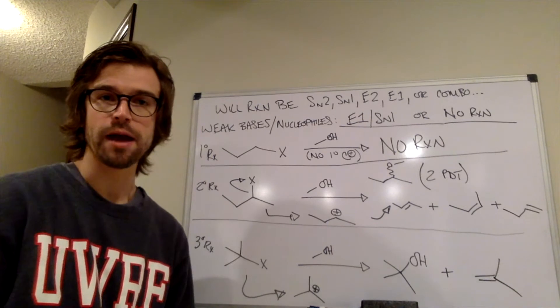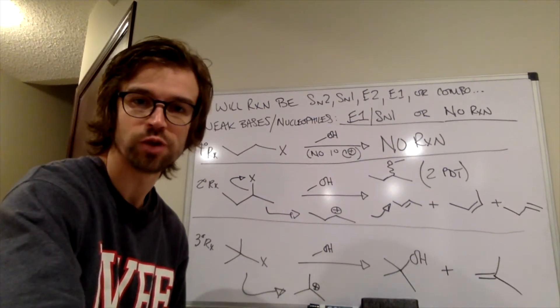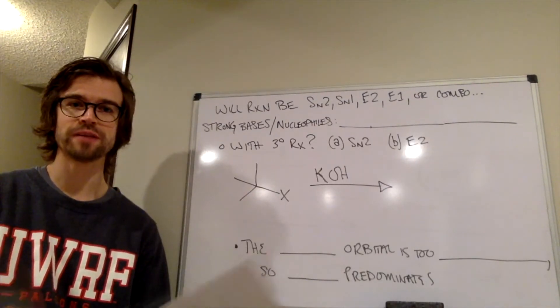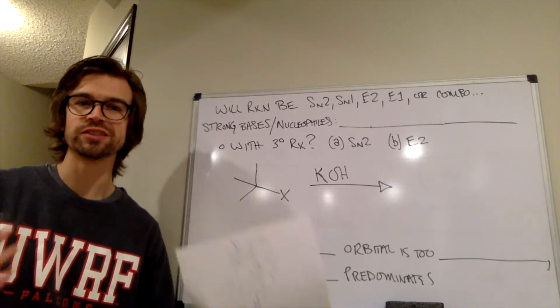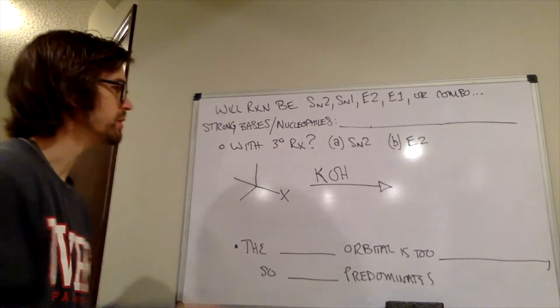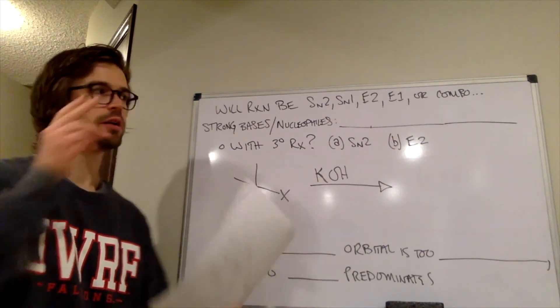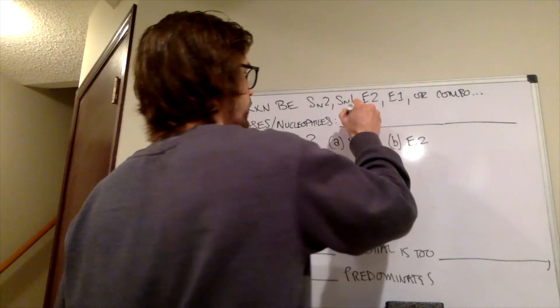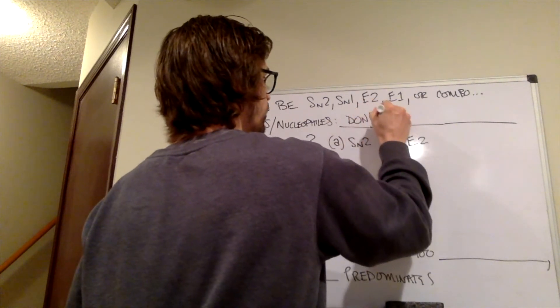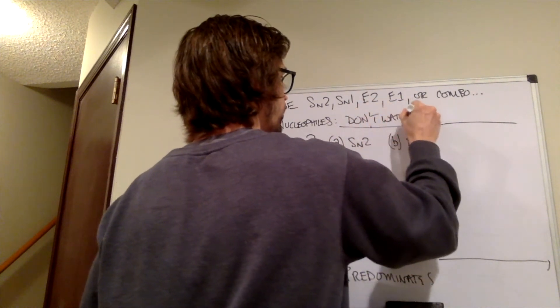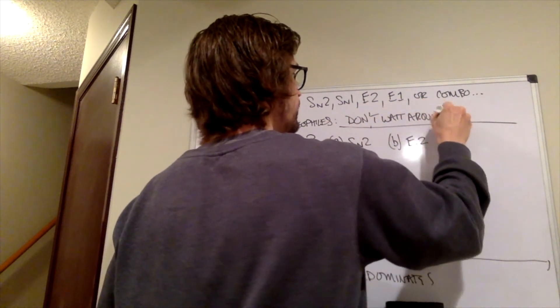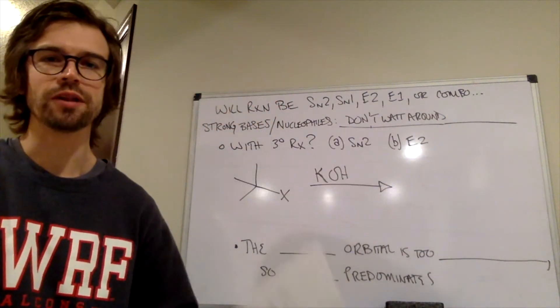So that is weak bases and weak nucleophiles. So we're going to come back with strong nucleophiles and strong bases. Weak nucleophiles, weak bases, wait around for a really strong electrophile, that carbocation that's necessary. But strong bases and nucleophiles, what did we say about those? Because they don't wait around. What does that mean? That means that they are only bimolecular reactions.